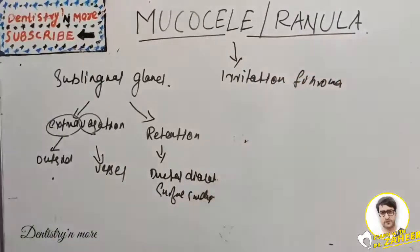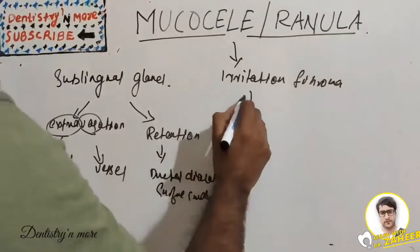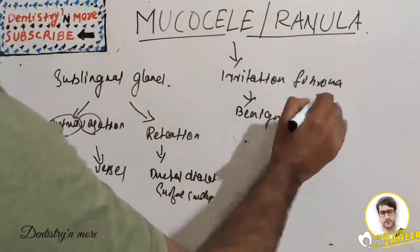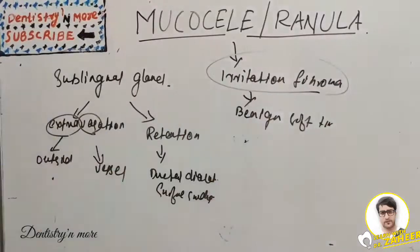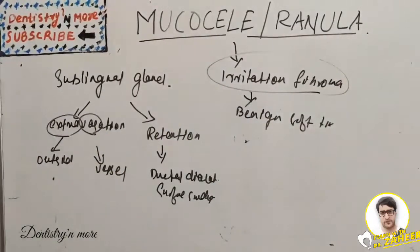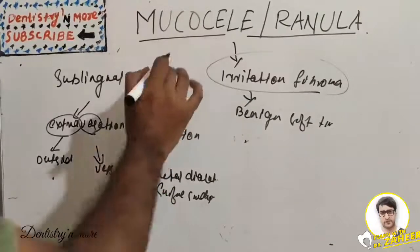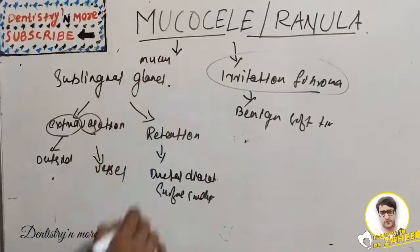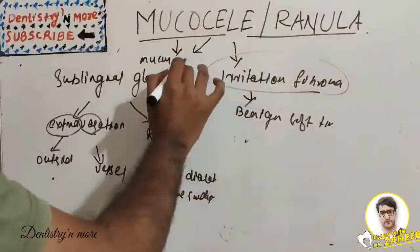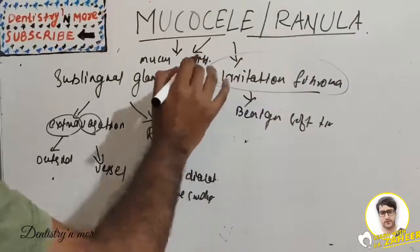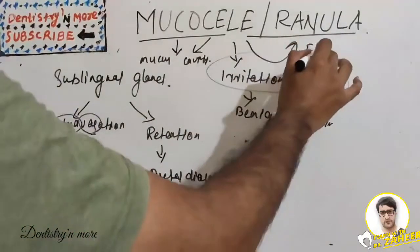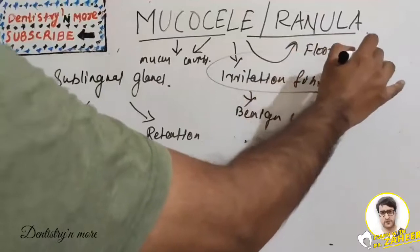Mucoceles and irritation fibromas are the most common types of benign soft tissue masses in the oral cavity. The word 'muco' means mucus and 'cele' means cavity. When this mucocele occurs in the floor of the mouth, it is known as a ranula.